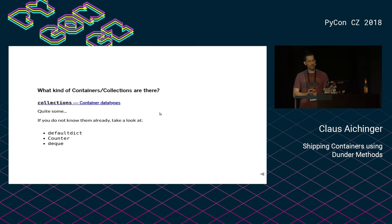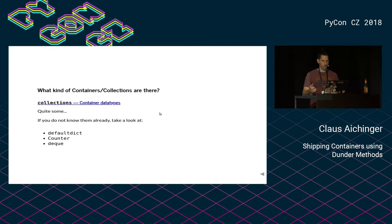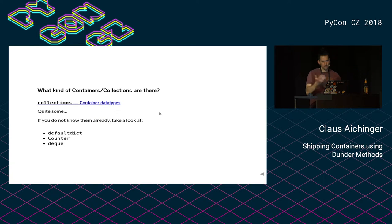There are actually quite a lot of container types if you haven't taken a look. When one starts to learn Python, you make progress very fast and may overlook some of the more exotic collections or container types like defaultdict or Counter, which are super useful. Even if you haven't heard of them, you are encouraged to take a look.